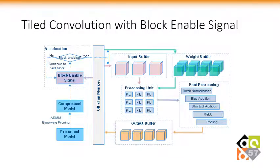Next, I will introduce our hardware framework for the tiled convolution with block-enabled signals. As mentioned before, a weight block in pruning is equivalent to a weight tile in FPGA design. Each weight block has a block-enabled signal which is pre-stored in an array in on-chip memory. If the block signal is enabled, the weight tile and corresponding input feature tile are fetched from off-chip memory to on-chip buffers, and participate in computations in the processing unit to generate the output feature tile. The output tile is then processed through layers such as batch normalization, shortcut connection, activation, and pooling. If the weight block is not enabled, the whole computation process for the block is skipped.